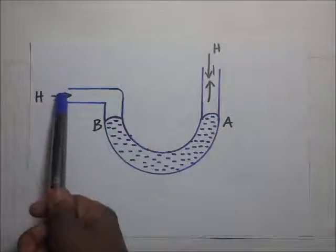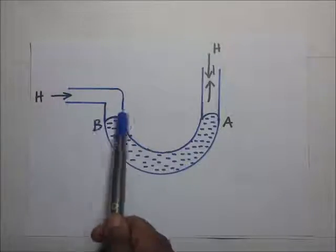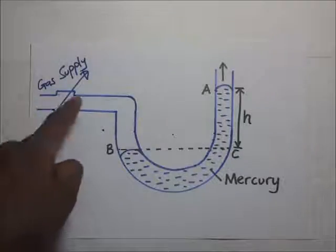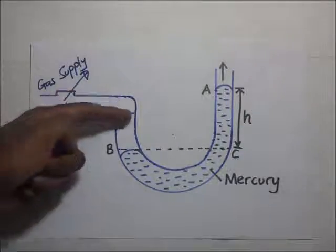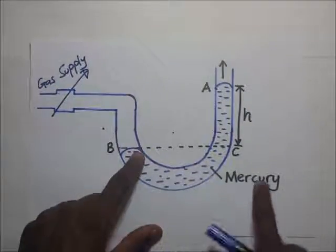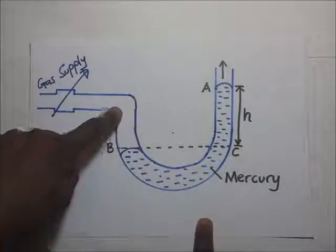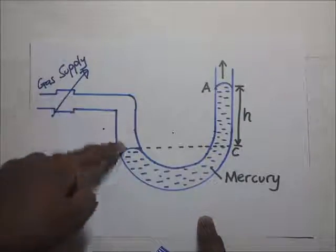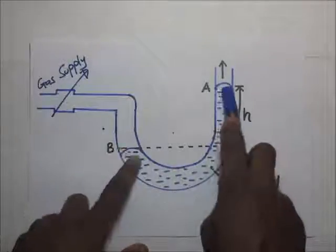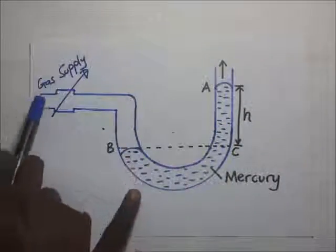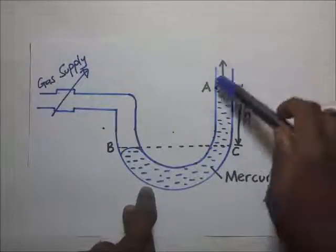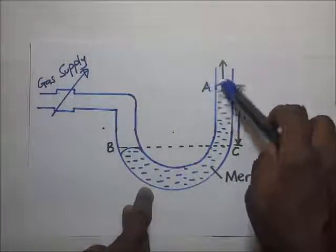If we introduce a gas source here, the gas coming in is going to push the levels of the mercury down in that limb. The mercury level in this limb will move down, and the other limb will move up, because the pressure exerted by this gas is greater than the atmospheric pressure on top of the mercury in the other limb.